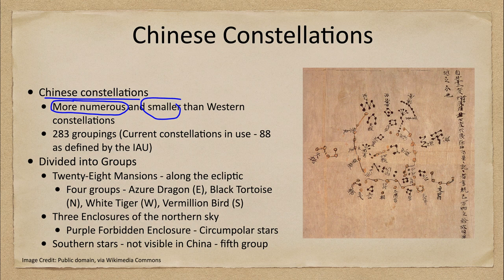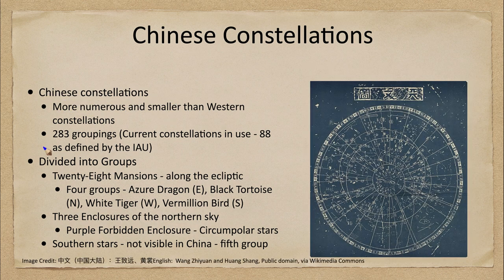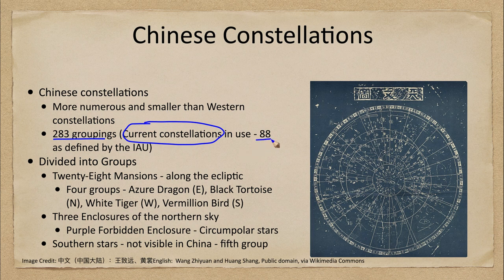There were a total of 283 groupings. Just for comparison, the current constellations we use in astronomy today total 88, as defined by the International Astronomical Union.